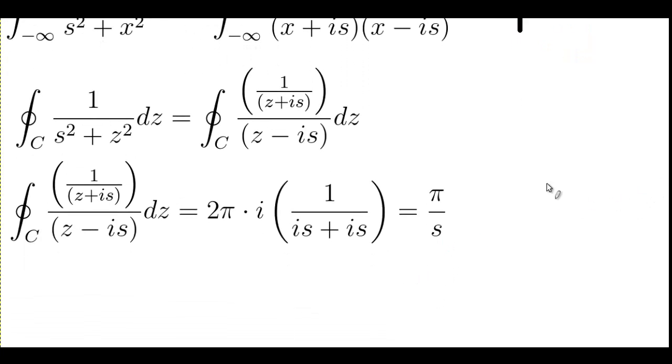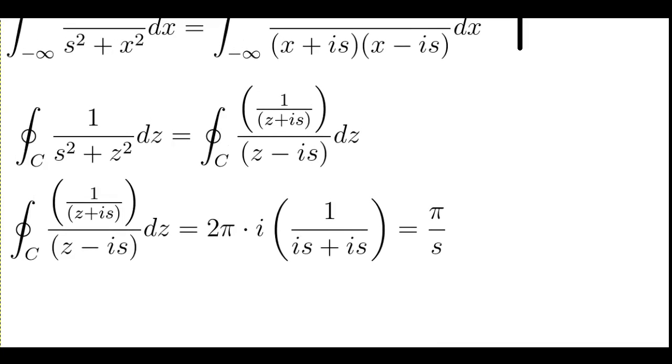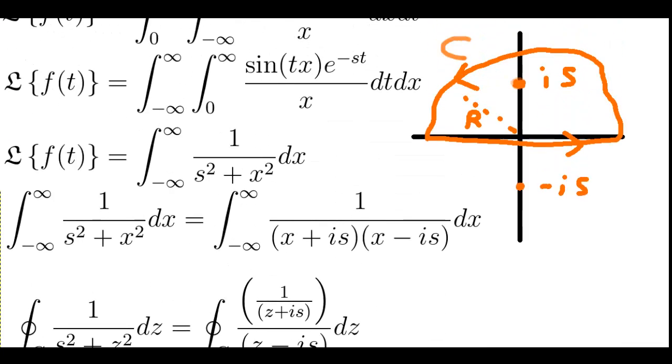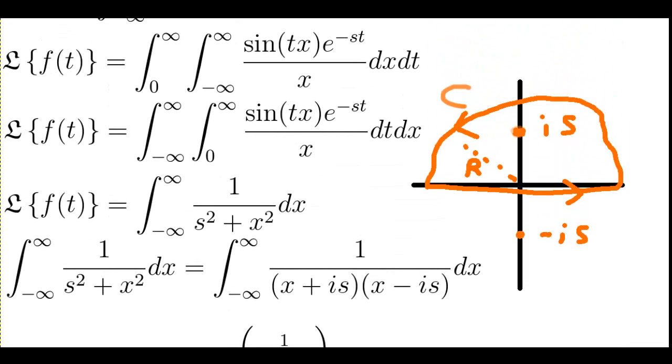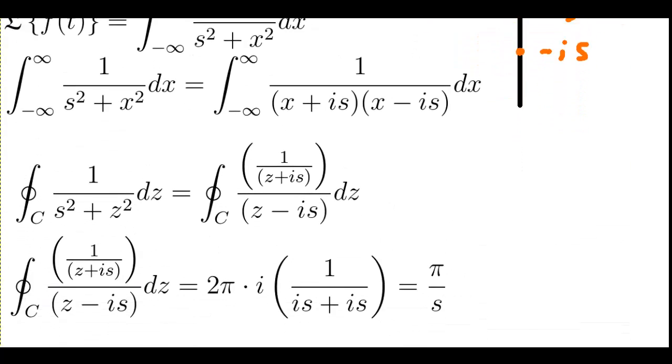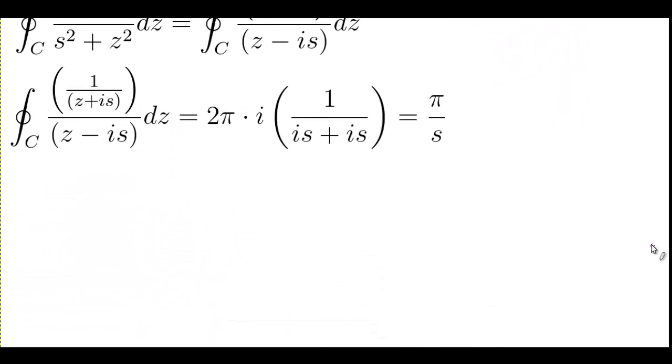What are we going to do with this little result here? This pi over s still has an s in it. And we need to get rid of it. Well, we took a Laplace transform to get here. So, logically speaking, we can take an inverse Laplace transform to get back. Which we will do.